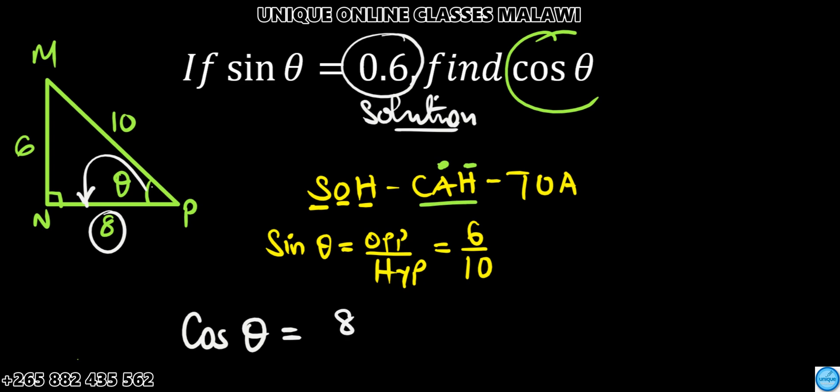Divided by hypotenuse, that's 10. So we can put 10 here. If you can simplify this one, 8 divided by 10 is the same as 0.8.